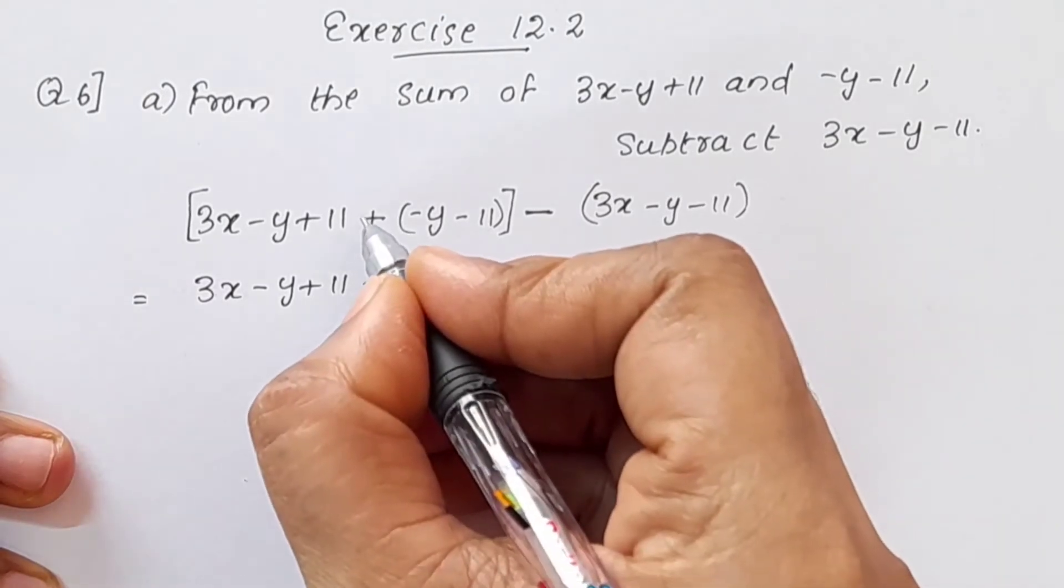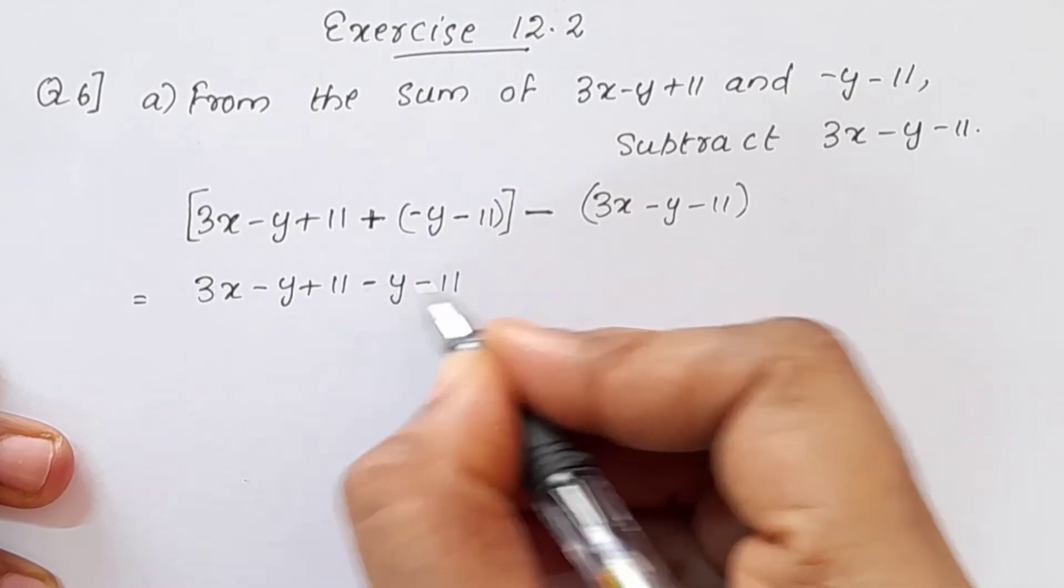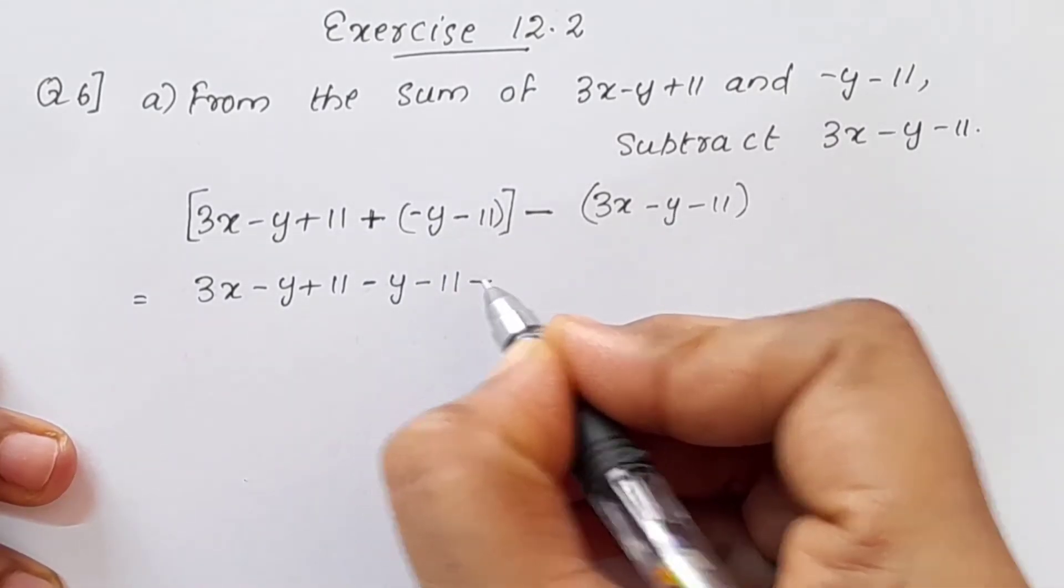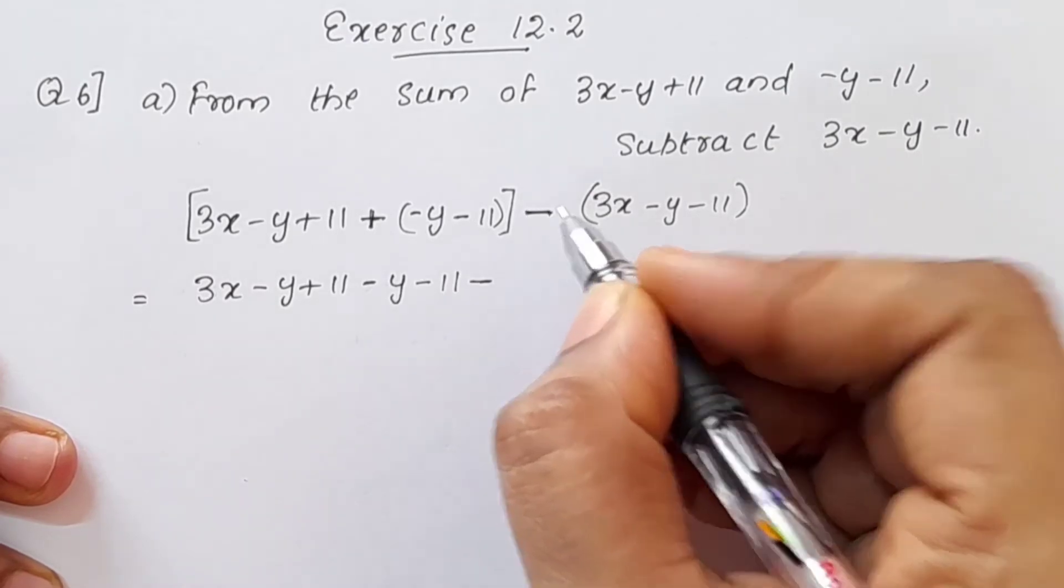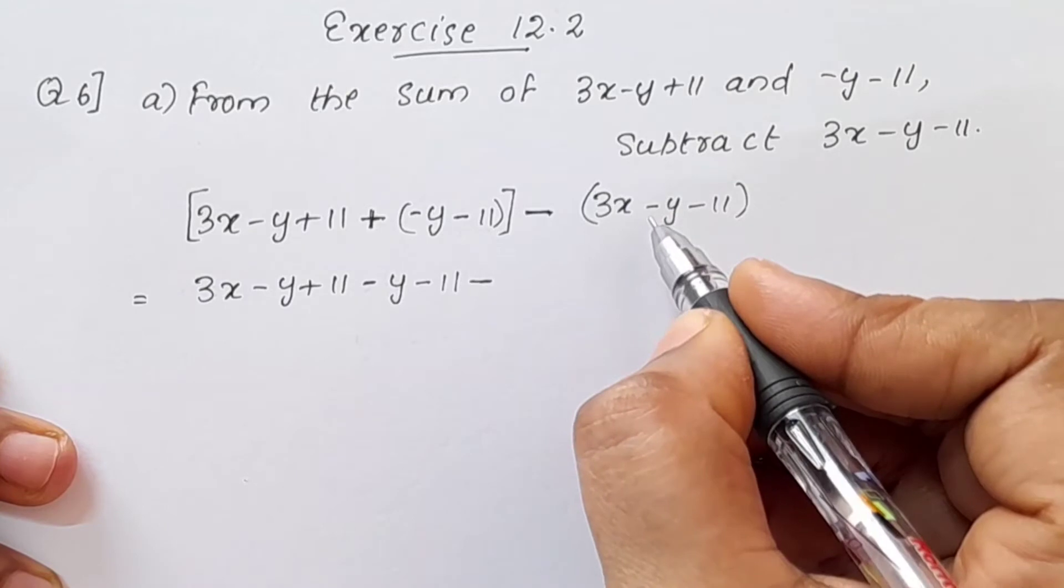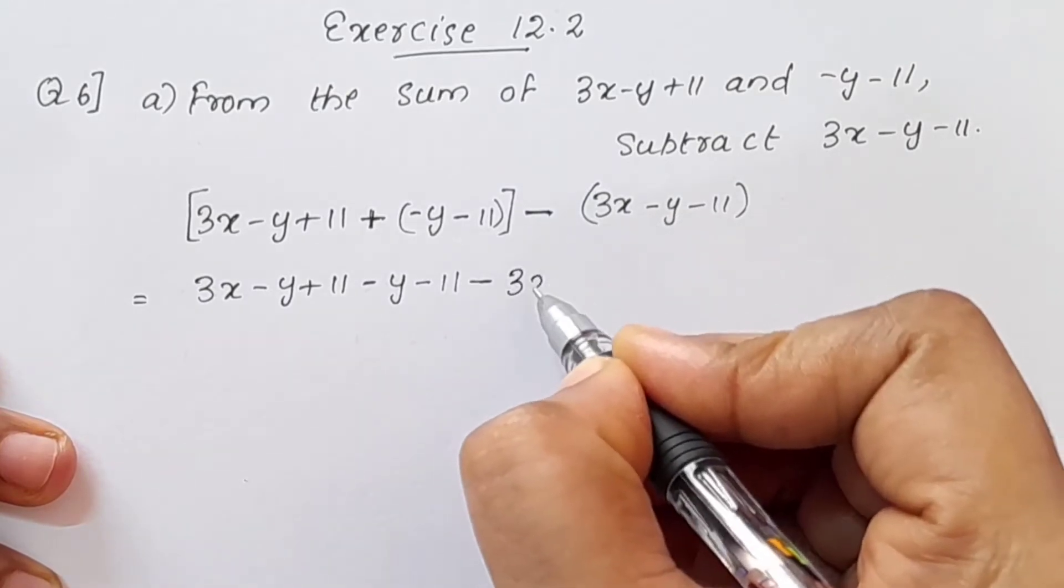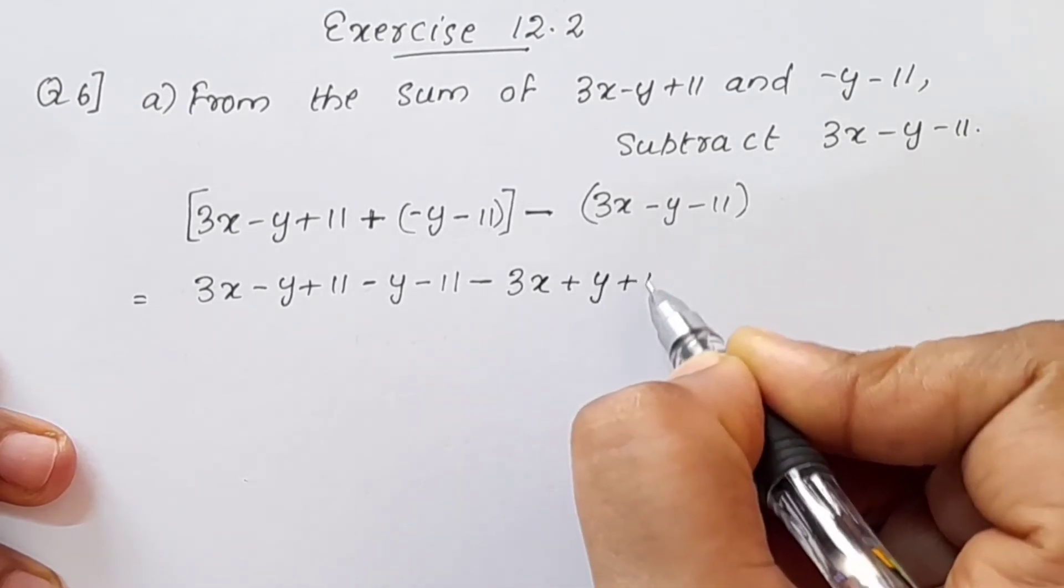We will count here the equation in our bracket. This means that we will change the signs in our bracket. The equation in the bracket, the signs will change: 3x plus y plus 11.